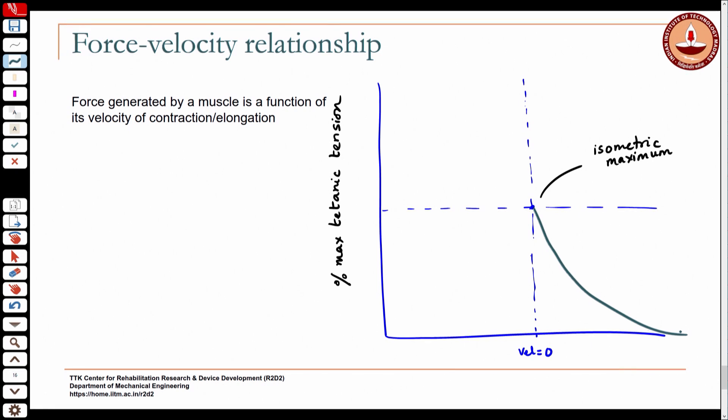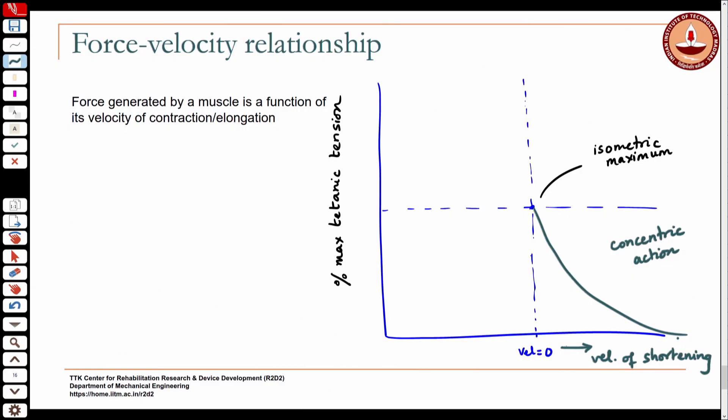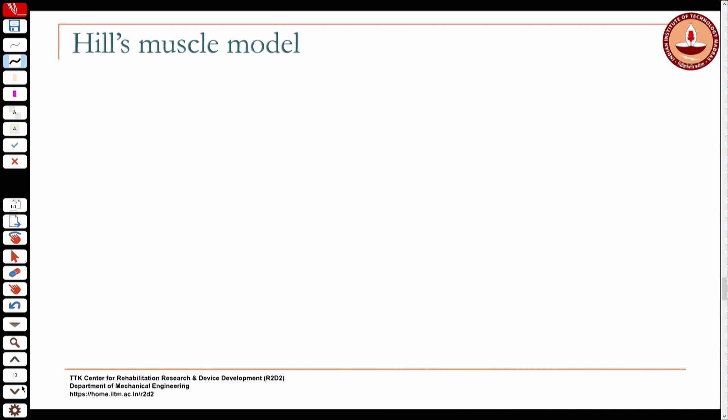If the muscle contracts faster, it can only exert a smaller tension. The reason is that as you increase the velocity of shortening, the cross bridges that are formed are fewer, so there is not enough cross bridging to sustain a larger force. When the velocity of muscle action is at the isometric level, the maximum number of cross bridges exist.